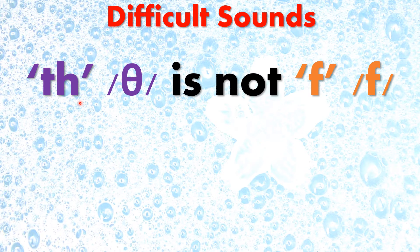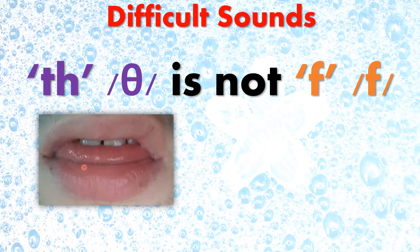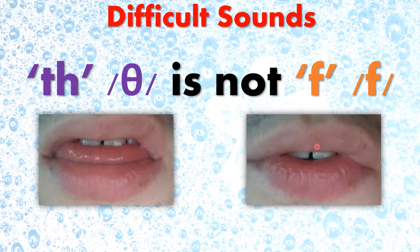Difficult sounds: TH is not F. TH and F are two different sounds. Here is a picture of TH. When you make the sound TH, you put your tongue between your teeth. But when you make the sound F, your tongue is behind your teeth.